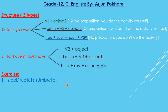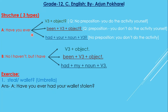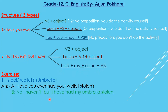Now the answer: 'Have you ever had your wallet stolen?' V1 'steal' will be given in the question and you have to change it to V3 'stolen.' The response is: 'No, I haven't, but I have had my umbrella stolen.' In this way, you can do your answer.